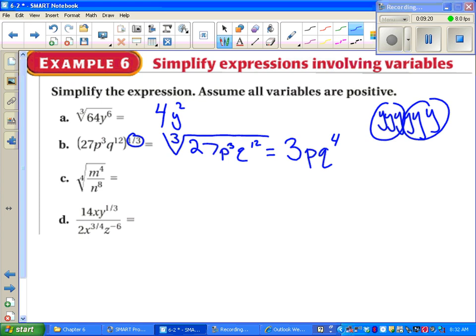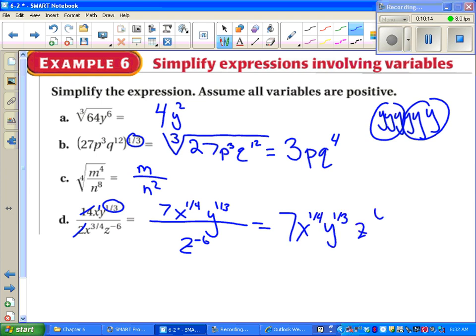4th root of n to the 4th over n to the 8th. First you say, how many sets of 4 m's do we have? Just one. How many sets of 4 n's do we have? 2. D looks a little more convoluted. We can start by simplifying the number. Notice that 1/3rd only affects the y. So 14 over 2 makes 7. We've got x to the 1st on top, x to the 3/4ths on bottom, so we subtract. 1 minus 3/4ths is 1/4th. y, we have a 1/3rd on top and nothing on the bottom, so we've got y to the 1/3rd. z, we've got only on the bottom z to the negative 6. We don't want a negative on the bottom. We rewrite that as putting it on top. 7 x to the 1/4th, y to the 1/3rd, z to the positive 6. That's really as far as you have to go. If you want to write them as radicals, that would be fine as well.